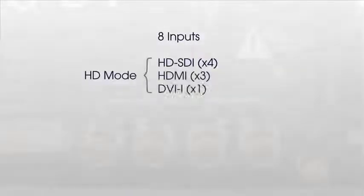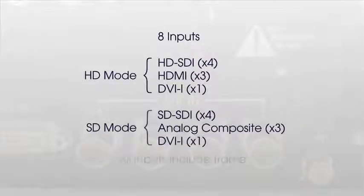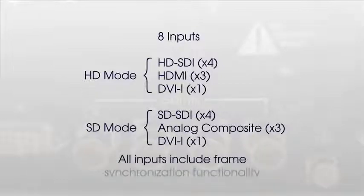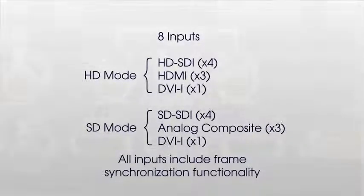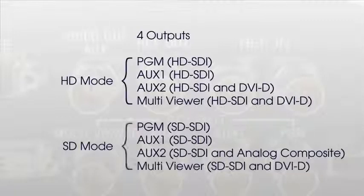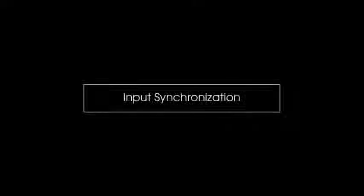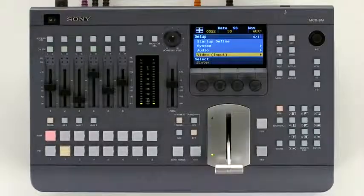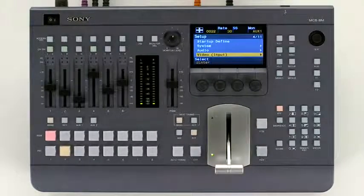Connect all inputs and outputs to the rear of the MCS8M panel. Having specified the image signal format and aspect ratio, you can simply gen-lock cameras and begin operations.